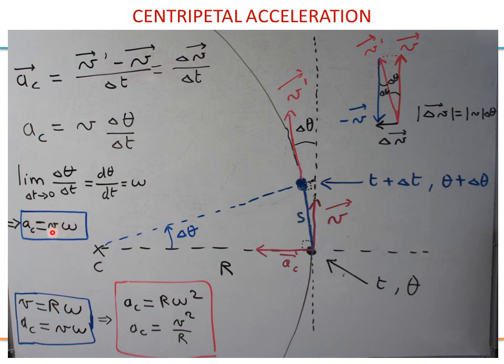V and omega are connected — they are not independent. We can find a formula containing only omega or only V. Since V equals R omega, if we eliminate V we get AC equal to R omega squared, and if we keep only V we get AC equal to V squared divided by R.